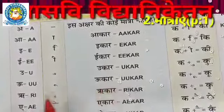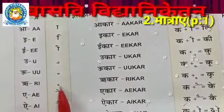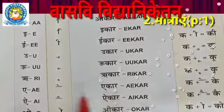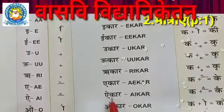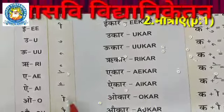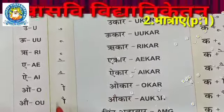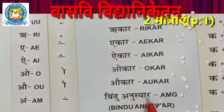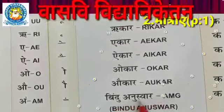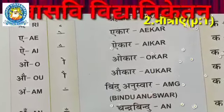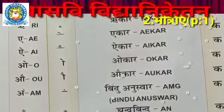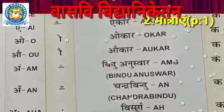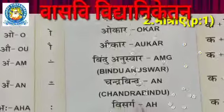Ru ki maatra - rukar. E, e ki maatra - ekar. Ai, ai ki maatra - aikar. O, o ki maatra - okar. Au, au ki maatra - aukar. Am - bindu/anusvar. Ok, bindu anusvar ki maatra. Next - aha - visarg - aha ki maatra - visarg.